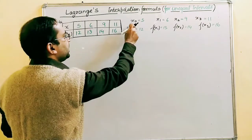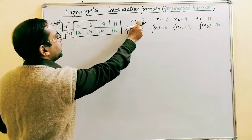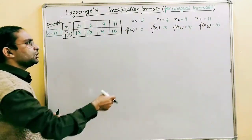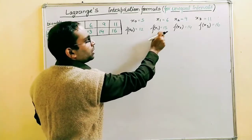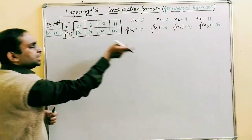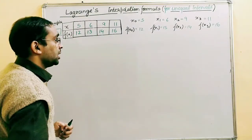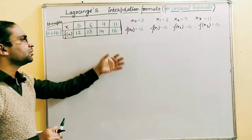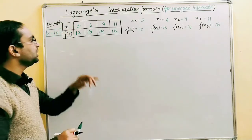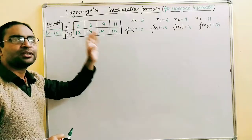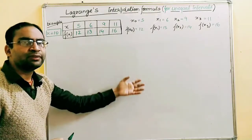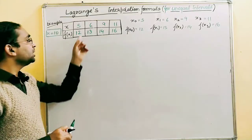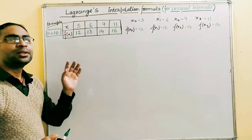So x₀ = 5, x₁ = 6, x₂ = 9, and x₃ = 11. Correspondingly, f(x₀) = 12, f(x₁) = 13, f(x₂) = 14, and f(x₃) = 16. In the Lagrangian formula, the number of terms depends on the number of given values. Since we have four values, we will have four terms. If seven values were given, the formula would have seven terms.